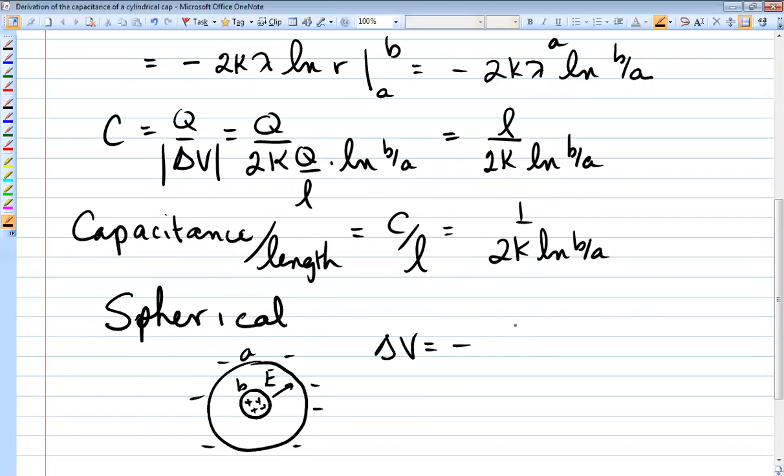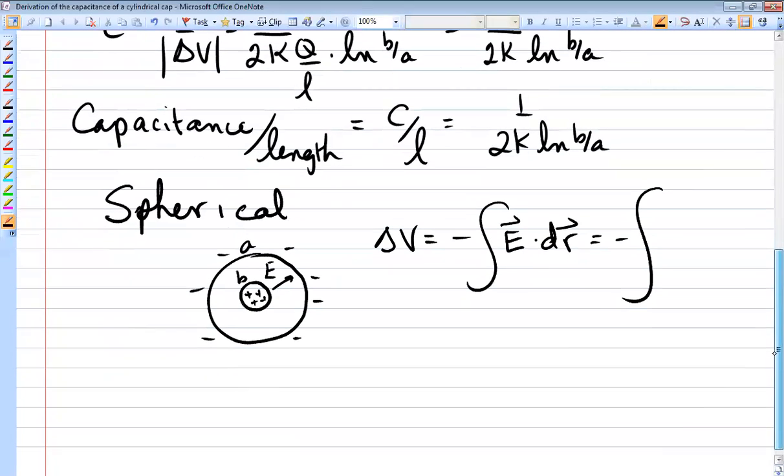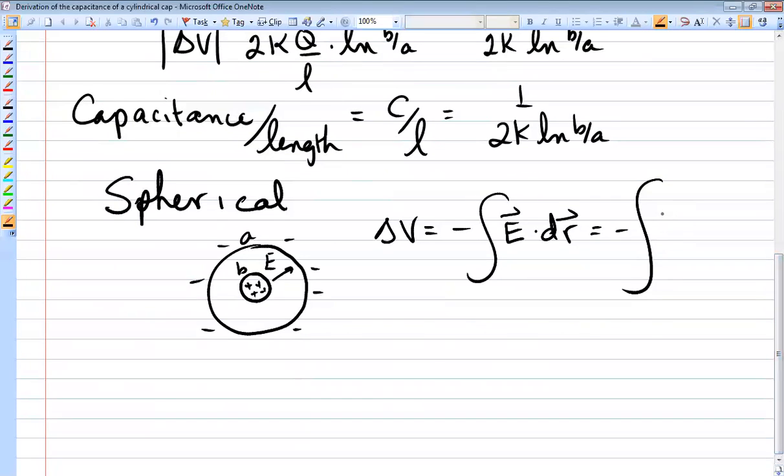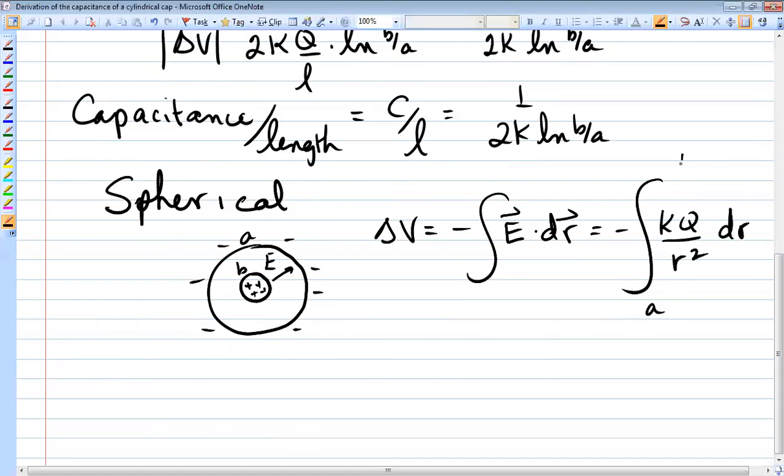The potential difference is the negative integral of E dot dr. And the electric field due to a spherically charged object, that center object, is just kQ over r squared. That's the electric field in the gap. So it's kQ over r squared dr from A to B, from the inner sphere to the outer sphere.